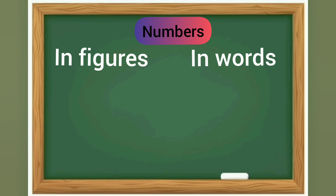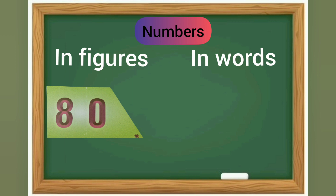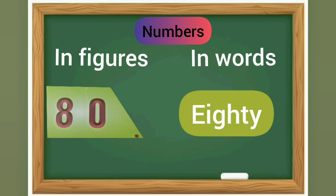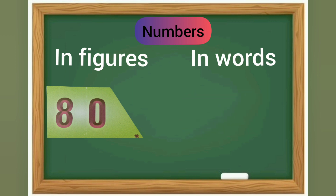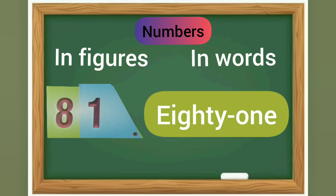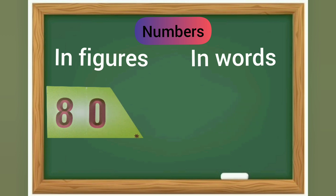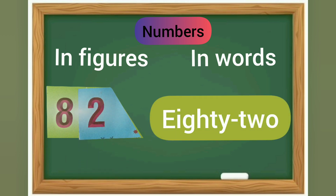Our next number is 80 and in words it is E-I-G-H-T-Y, eighty. 80 and 1 is 81. In words: E-I-G-H-T-Y O-N-E, eighty-one. 80 and 2 is 82. In words: E-I-G-H-T-Y T-W-O, eighty-two.